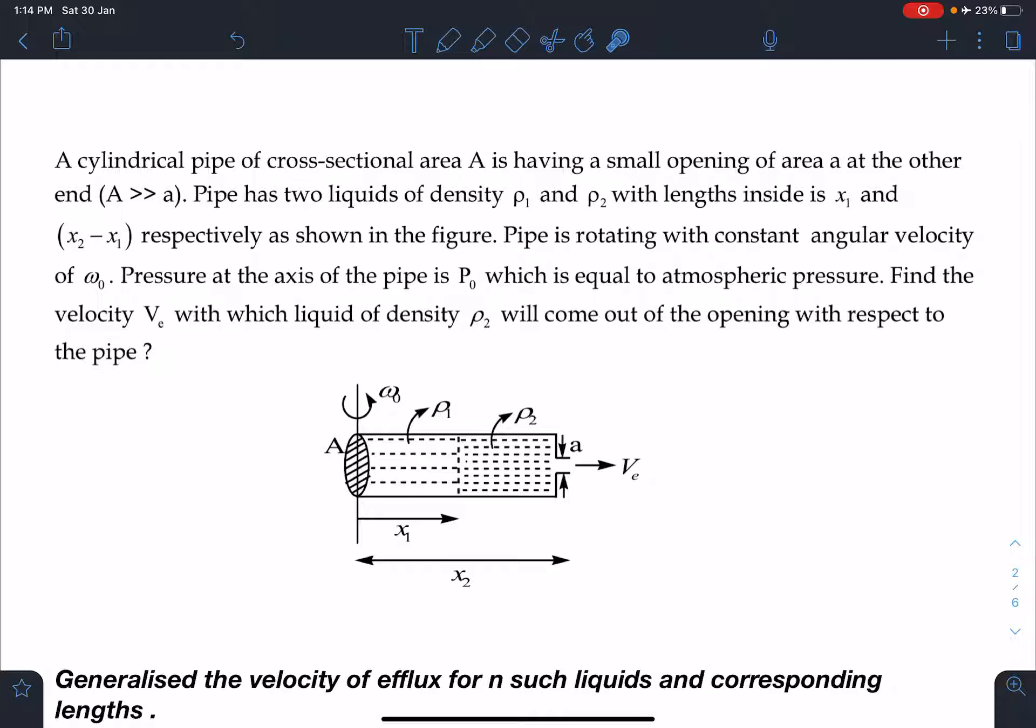The pipe has two liquids of density rho1 and rho2 with length inside x1 and x2 minus x1 respectively. That means all the lengths are measured from the axis of rotation. Pipe is rotating with constant angular velocity of omega naught. The pressure at the axis of pipe is p naught which is also equal to atmospheric pressure. Find the velocity VE with which liquid of density rho2 will come out of the opening with respect to pipe.